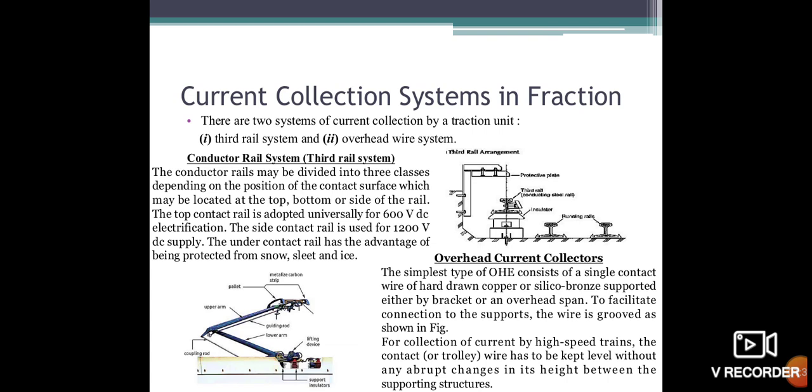Now the overhead current collector. The simplest type of overhead electrification consists of a single contact wire of hard drawn copper or silicon bronze supported either by bracket or an overhead span. To facilitate connections to the supports, the wire is screwed as shown in the figures. For current collection by high-speed trains, the contact or collector wire has to be kept level without any abrupt change in its height between the supporting structures.